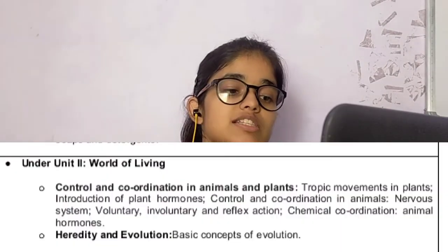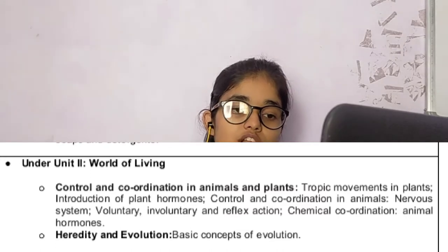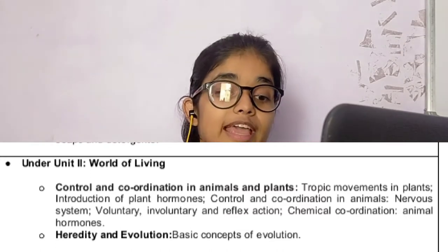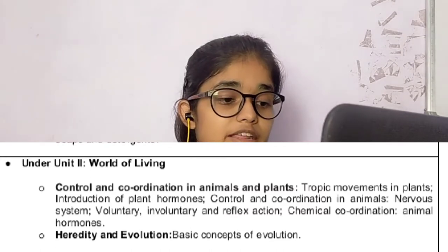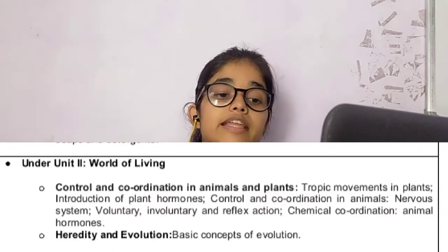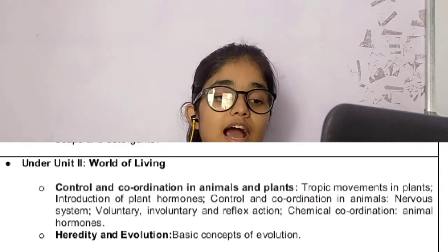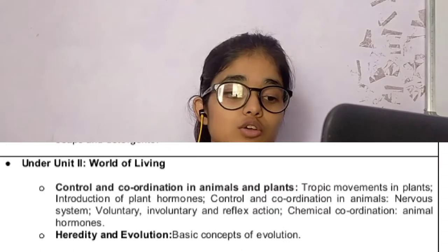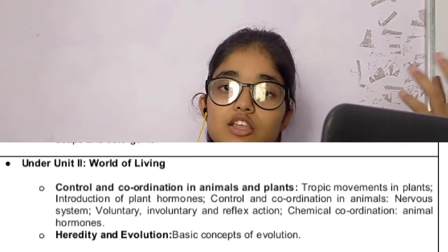Chapter number 7 is Control and Coordination in Animals and Plants. There is a lot that has been reduced. The deleted topics include: Tropic Movement in Plants, Introduction of Plant Hormones, Control and Coordination in Animals, the Nervous System, Voluntary and Involuntary and Reflex Actions, Chemical Coordination, and Animals and Hormones. All of these major topics have been reduced.